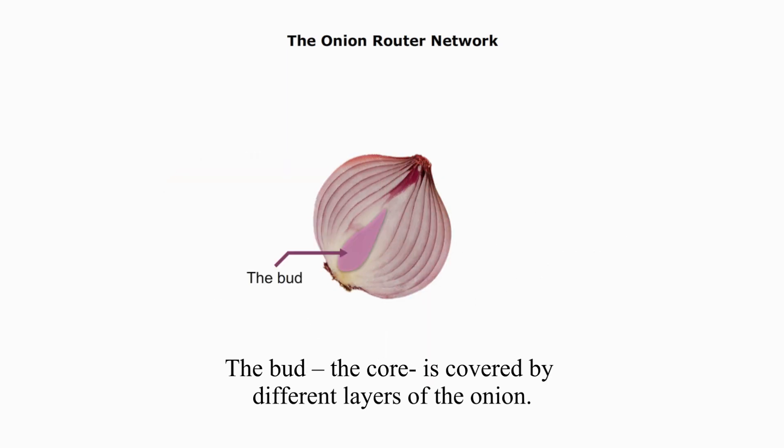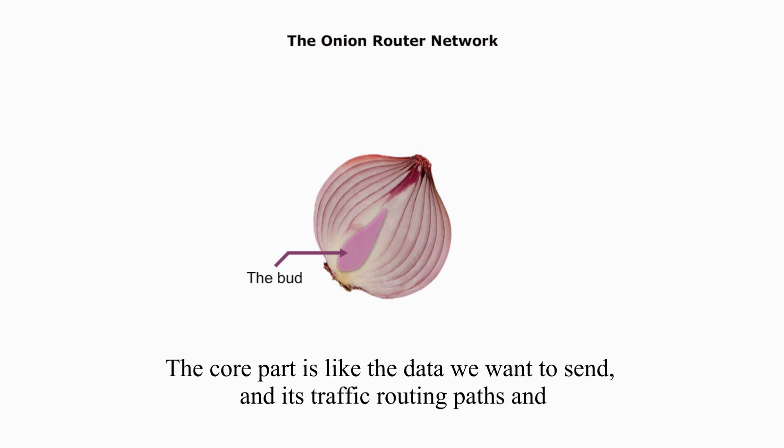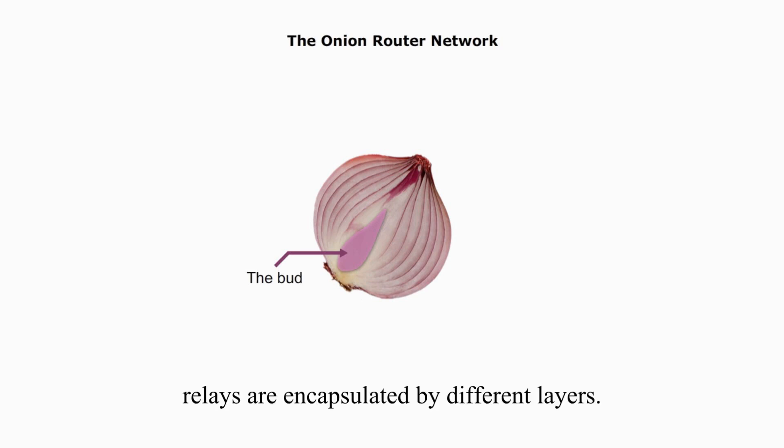The bud, the core, is covered by different layers of the onion. The core part is like the data we want to send, and its traffic routing paths and relays are encapsulated by different layers.